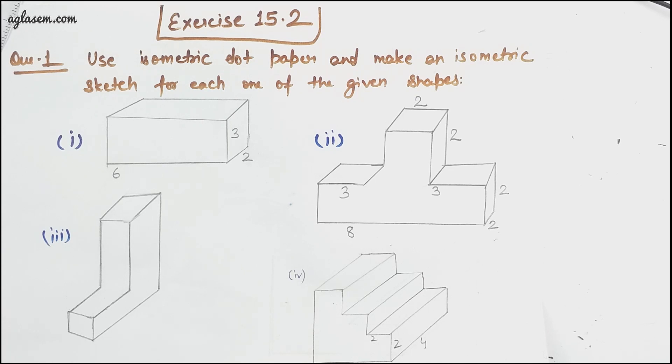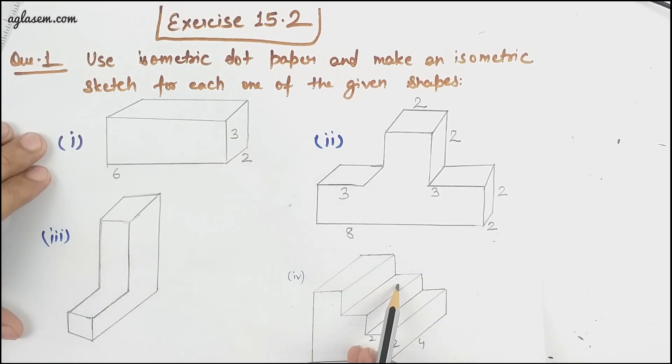Use isometric dot paper and make an isometric sketch for each of the given shapes. So we are given with the following four shapes one, two, three and four. Let's see how it will look like one by one.